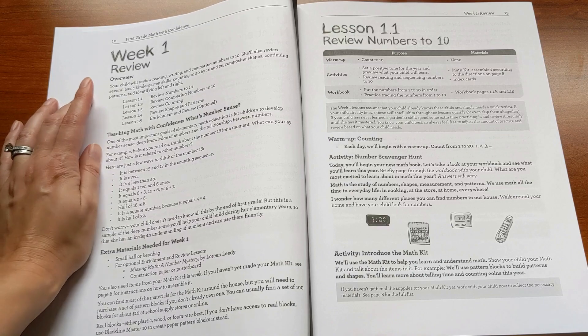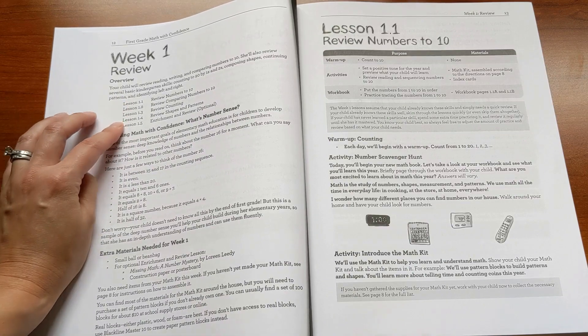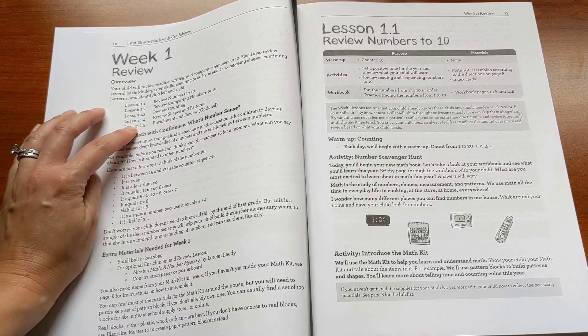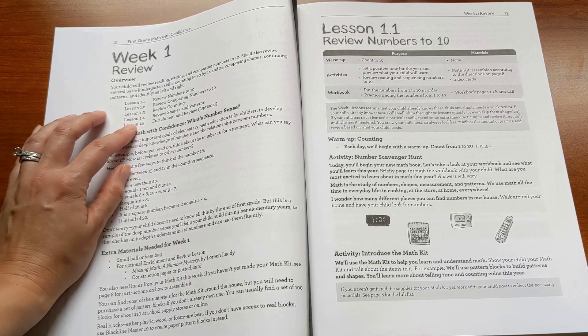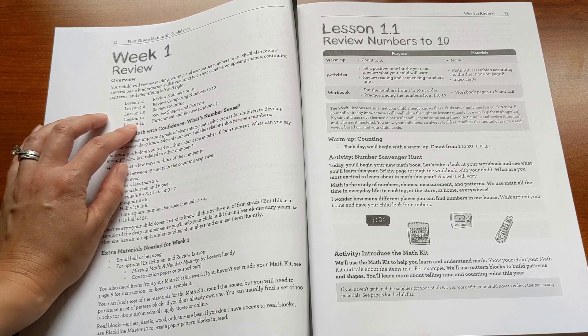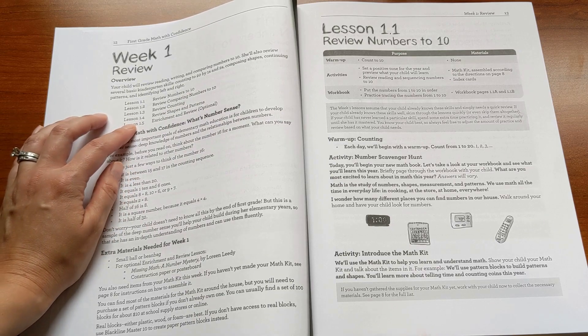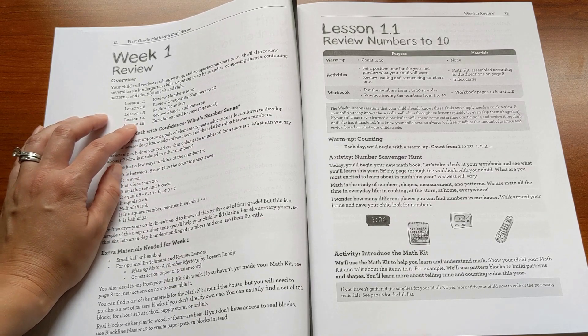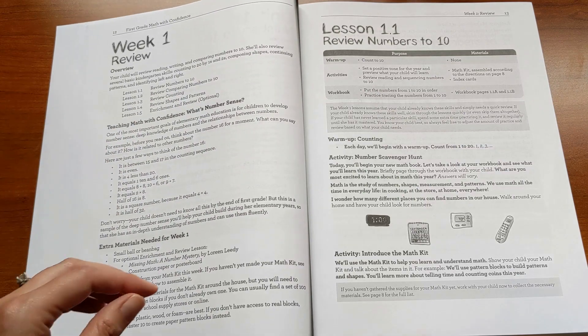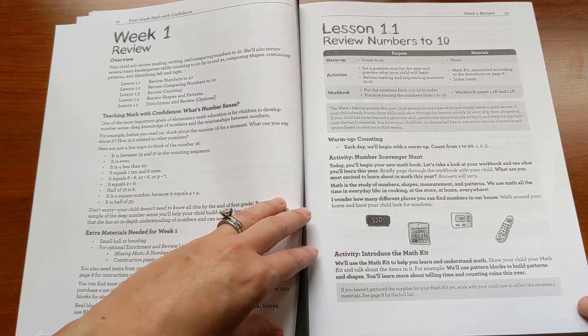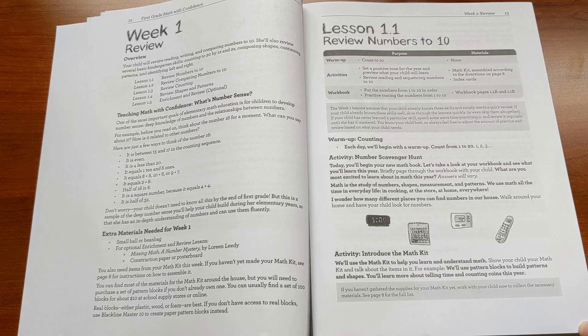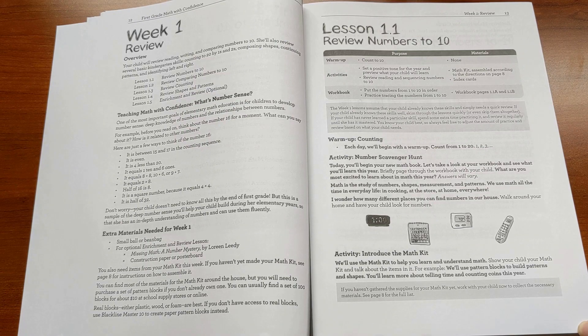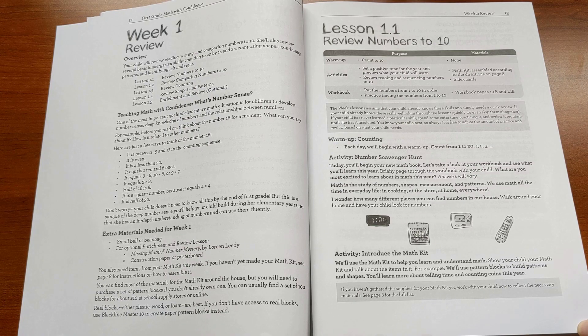So each week has five lessons, four of them are required core lessons, and then one is an optional enrichment lesson. A lot of families find that they're really fun, their kids love doing them, and they're a really enjoyable part of the program. But if you don't have time for them, that's perfectly fine. Each lesson should take you about 20 to 25 minutes total. That's including about 10 to 15 minutes of parent teacher time, and then five to 10 minutes of the student completing the workbook.